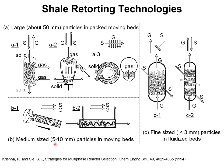We could imagine particles of 5 to 10 millimeters in a rotary kiln device with co-current flow of gas and solid, or in a screw conveyor with co-current flow of gas and solid inside the conveyor. If particle sizes are smaller than 3 millimeters, we could imagine a fluid bed construction with well-mixed solids and upflow of gas, or staged fluidized beds with perforated plates for redistribution of the gas, allowing for multi-stage fluidized bed operations.